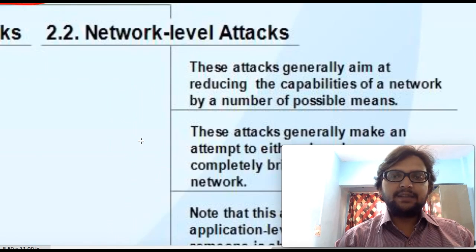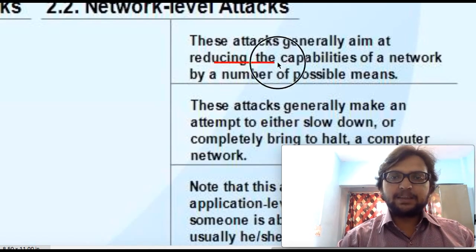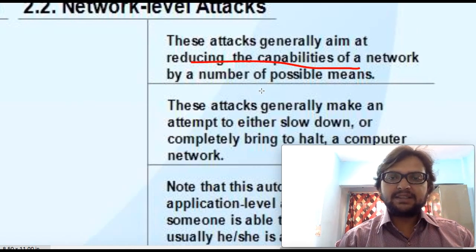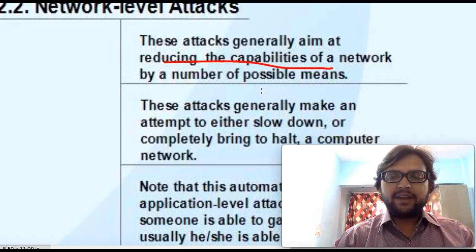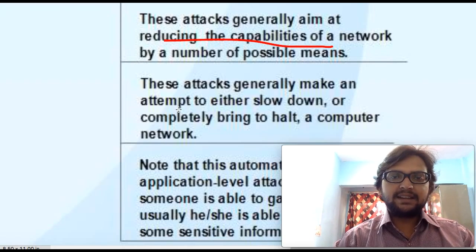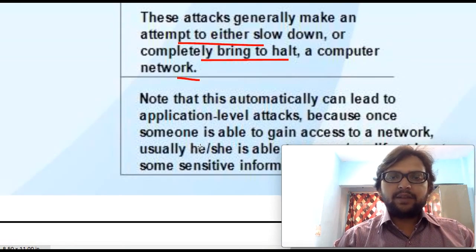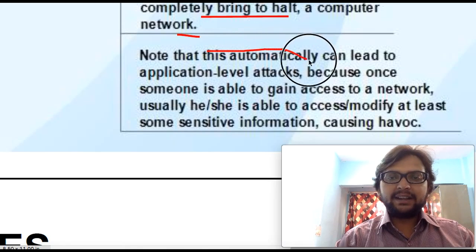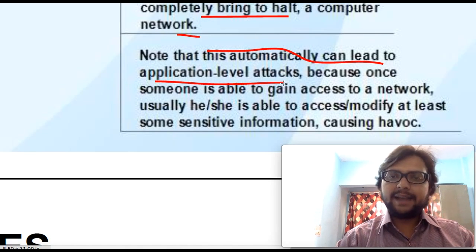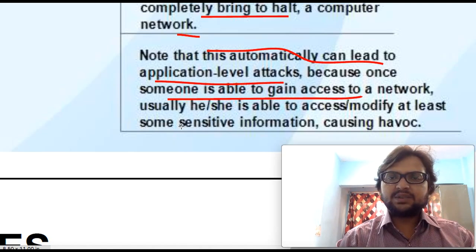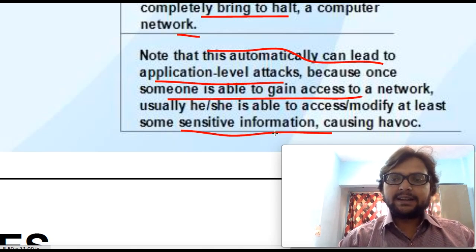Network-level attack aims at reducing the capability of a network by various means, including DoS attacks that flood the network with dummy requests, slowing it down or bringing it to a halt. Importantly, a network-level attack can also lead to an application-level attack — once someone gains access to the network, they can easily access sensitive information present on different applications.